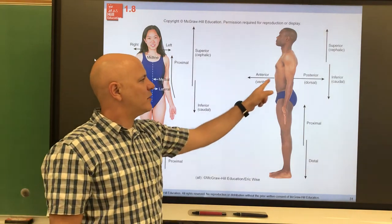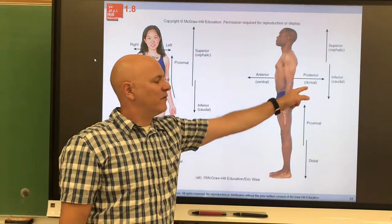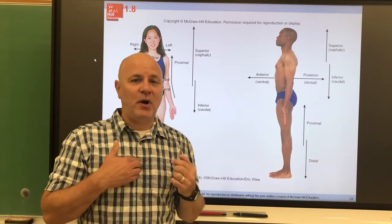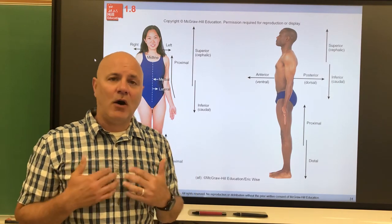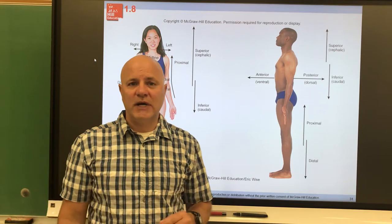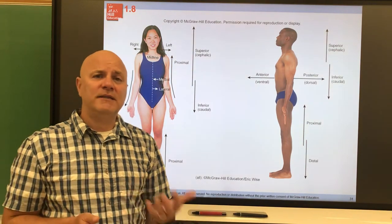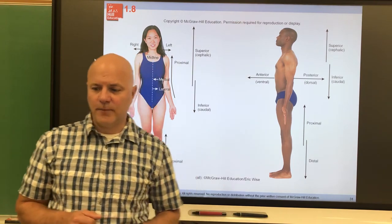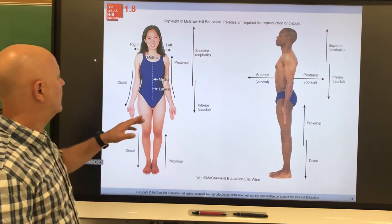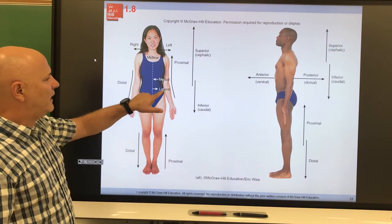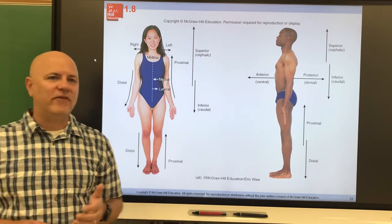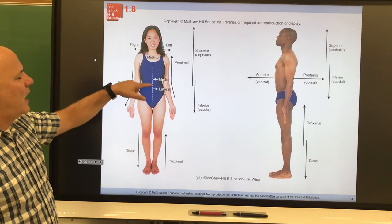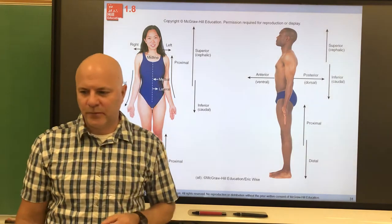Next are anterior (also called ventral), meaning towards the front, and posterior (also called dorsal), meaning towards the back. For example, the sternum is anterior to the heart, and the heart is posterior to the sternum. But the heart is anterior to the backbone, and the backbone is posterior to the heart. Medial means close to the midline; lateral means towards the sides or away from the midline.